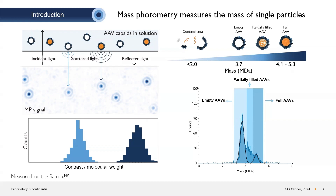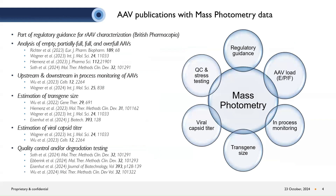An example of real AAV data is shown on the right, whereby each peak is fit to a Gaussian distribution for statistical analyses of the empty, partially filled, and full populations. Here is a list of publications where the authors use mass photometry to study various aspects of AAV production and characterization, including empty-full analyses, estimation of transgene size, and in-process monitoring during production.